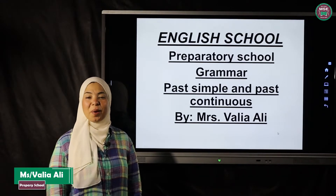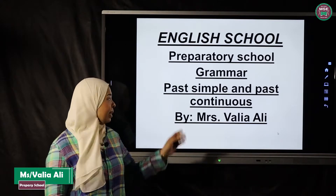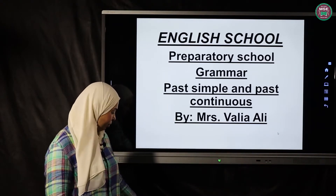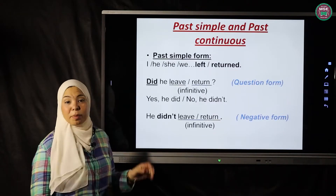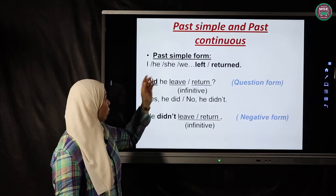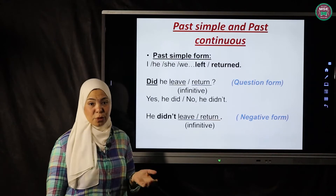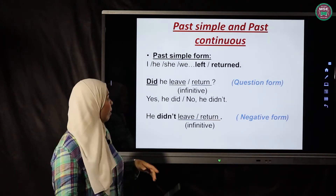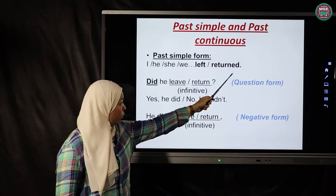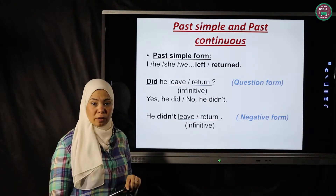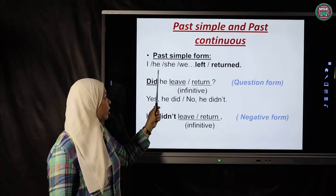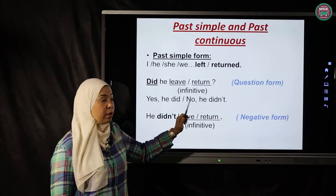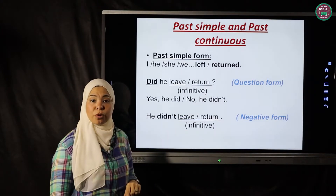Good morning dear students. Our grammar lesson today is past simple and past continuous. Let's start first with the past simple. The form, as you know, is that we put the verb in the past form by adding -ed to the end of the verb, or changing the verb for irregular ones — like 'left', which is the past form of 'leave', and 'returned' for 'return'.